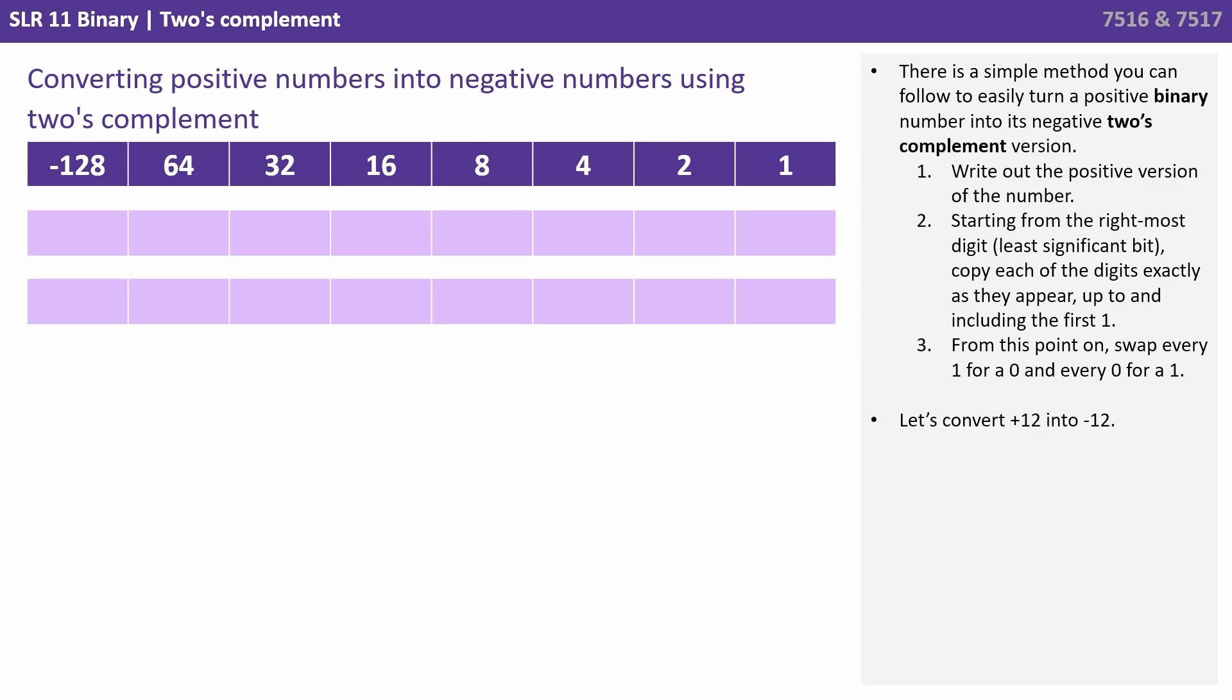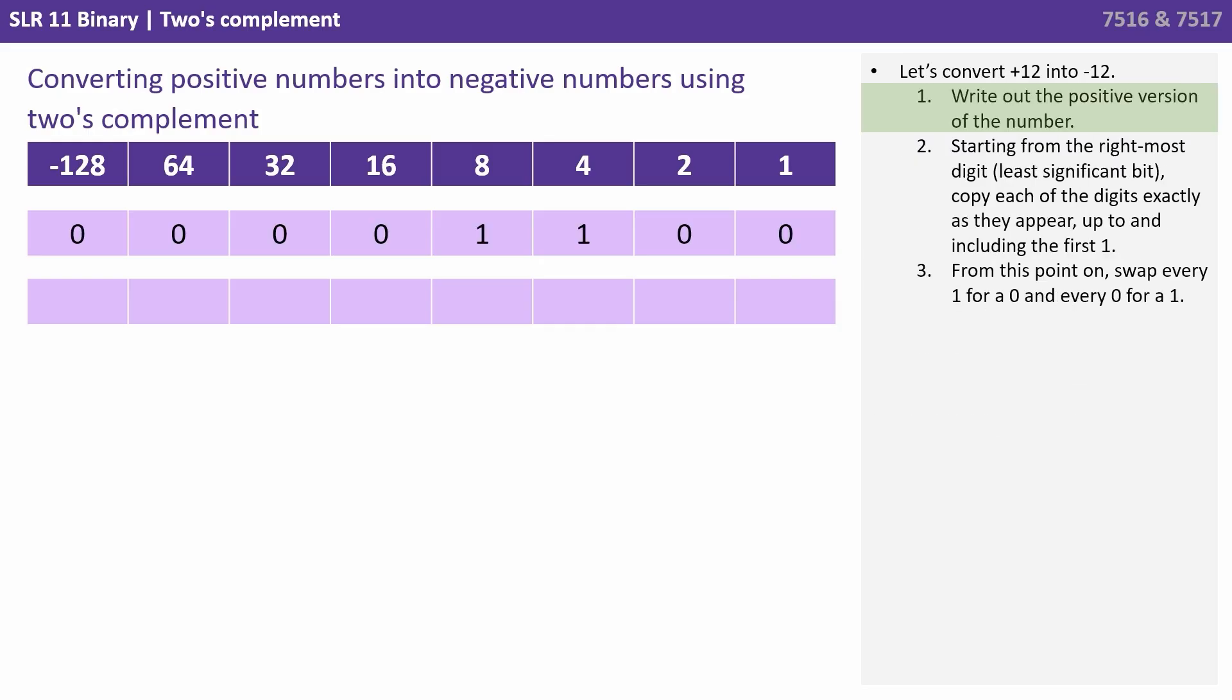So let's convert plus 12 into negative 12. So write out the positive version of the number first. So that's positive 12, an eight plus a four. Starting from the rightmost digit, the least significant bit, copy every number exactly as it appears up to and including the first one. So those three digits have been copied exactly.